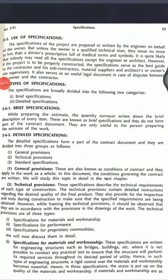The technical provision can be further classified into three types: one is specification for materials and workmanship, second is specification for performance, and third is specification for priority commodities. Among these provisions — general, technical, and standard — the technical provision is the most important one. It contains detailed instructions of desired quality and provides for inspection and testing during construction. The technical provisions are in accordance with the drawing of the work.